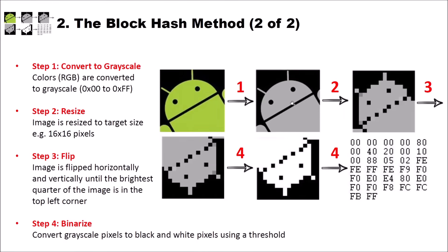In the second step, we resize the image to our target size — for instance 16 by 16 pixels. This can be changed in CrypTool 2 in the settings, so we have a 16 by 16 pixel grayscale image. Then in the flip step, the image is flipped horizontally and vertically until the brightest quarter of the image is in the top left corner.